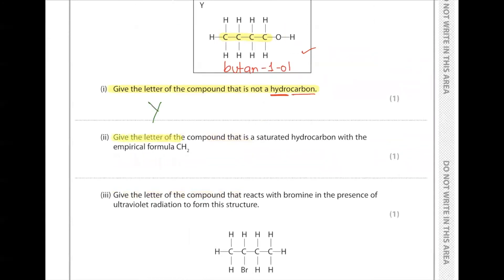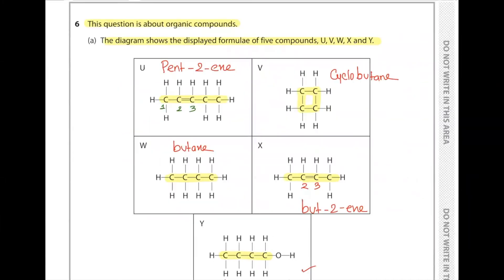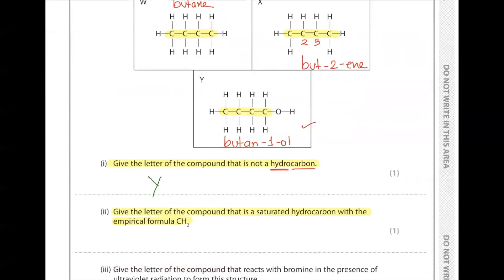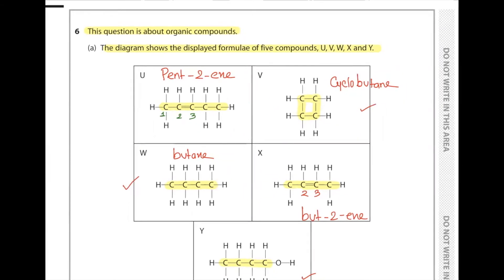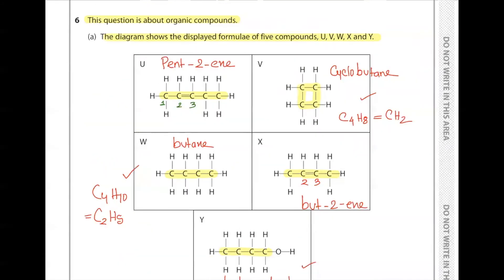Give the letter of the compound that is a saturated hydrocarbon with the empirical formula CH2. Saturated hydrocarbon must have a carbon-carbon single bond. We can find carbon-carbon single bonds in V and W. However, it must have empirical formula CH2. In cyclobutane we have C4H8, which will have an empirical formula of CH2. In butane we have C4H10, so the empirical formula will be C2H5. Therefore V is the answer.